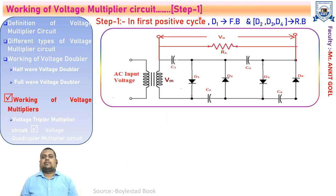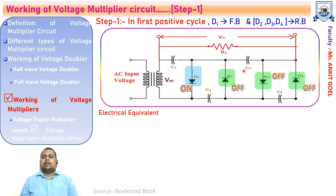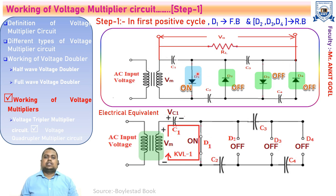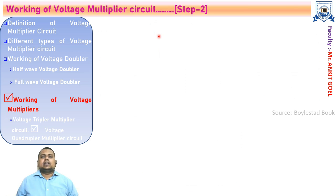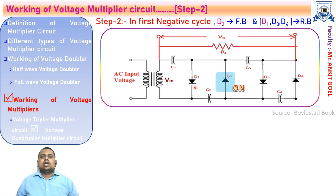Step 1 — In the first positive half cycle, diode D1 is in the forward bias state and the rest of the diodes D2, D3, and D4 are in the off state. Initially, all capacitors are uncharged and have a very high time constant. In the electrical equivalent circuit, D1 is replaced by a short circuit and D2, D3, D4 are replaced by open circuits. Applying KVL in the clockwise direction gives the voltage across capacitor C1 as VC1 = VM. Capacitor C1 holds the peak input voltage VM.